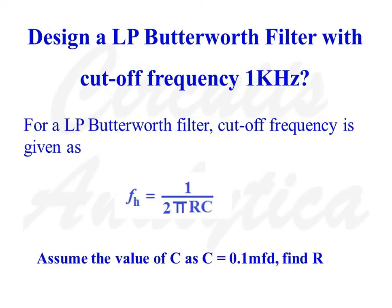Now let us do a problem. Design a low pass Butterworth filter with a cutoff frequency of 1 kilohertz. For a low pass Butterworth filter, the cutoff frequency is given as Fh = 1/(2πRC). Here there is only one equation and two unknown terms — R and C. So we must assume either the value of C and find R, or assume R and find C.